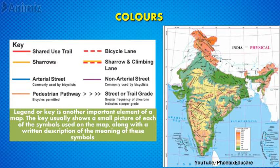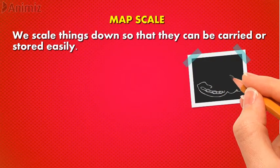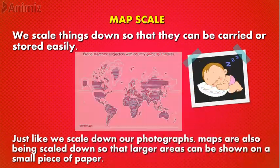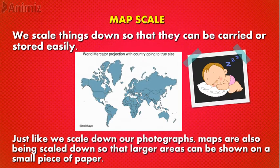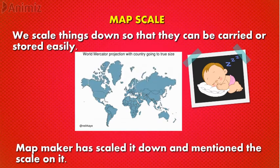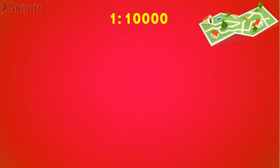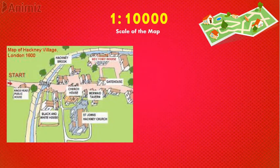The last but most important element of a map is the map scale. We scale things down so that they can be carried or stored easily — just like we scale down our photographs. Maps are also scaled down so that larger areas can be shown on a small piece of paper. The map maker has scaled the area down and mentioned the scale on it. This ratio — one is to ten thousand — is the scale of the map. Using this scale, we can translate the distance shown on the map into the actual distance on the ground.